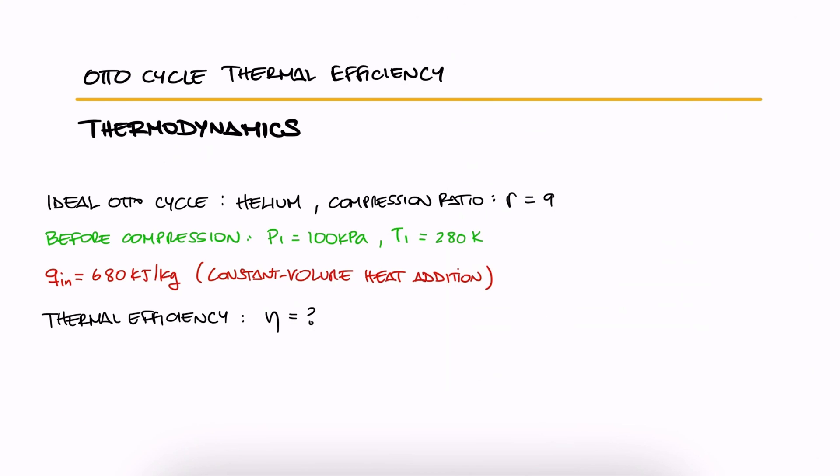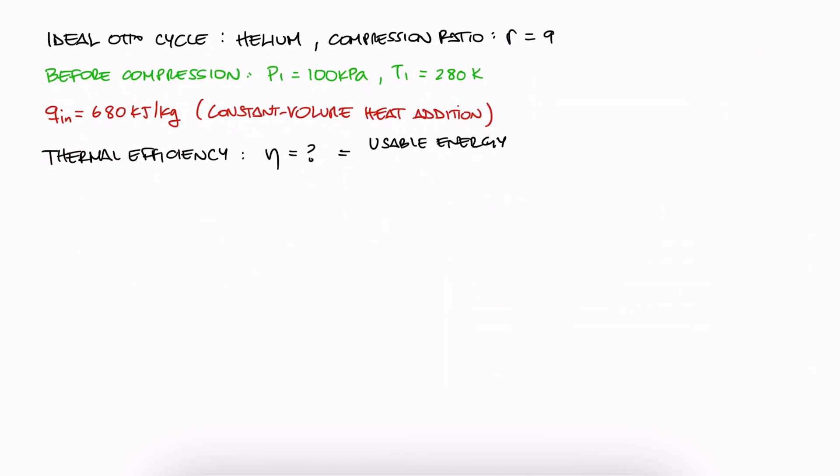The thermal efficiency of these cycles is always defined as the usable energy out over the energy in. This means that it's the net specific work out over the specific heat in. We were given Q in, but we have to find W net.